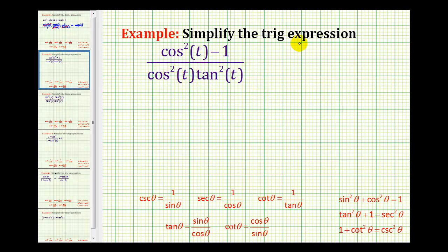Let's take a look at a second example. Here we have a fraction and a lot of times when we see trig function squared, we can take advantage of these Pythagorean identities here. But I think we'll start by rewriting tangent squared t in terms of sines and cosines. So we'll leave the numerator the same.